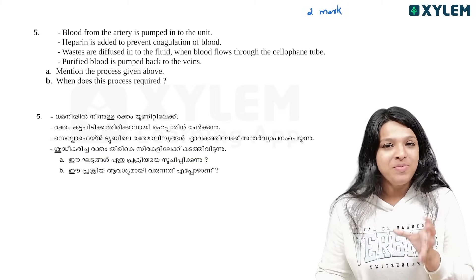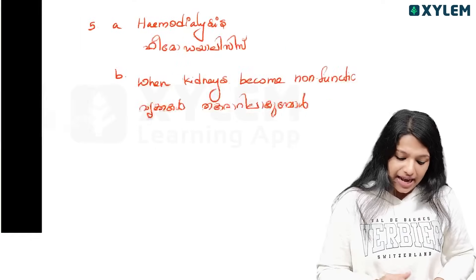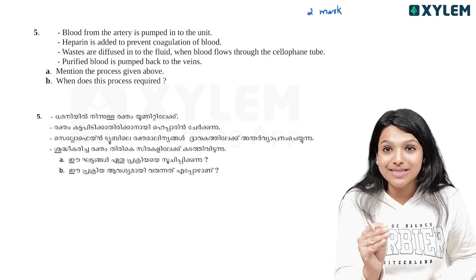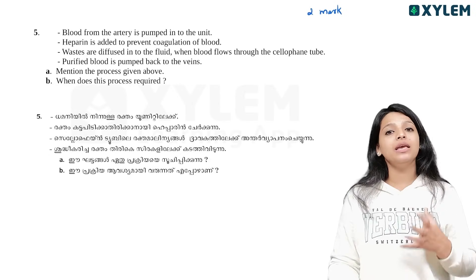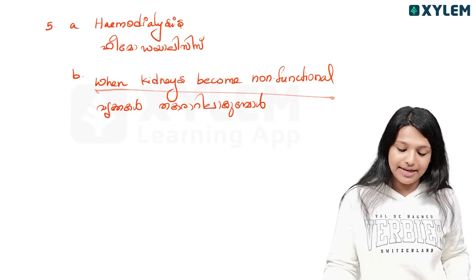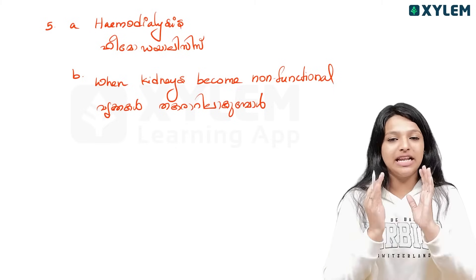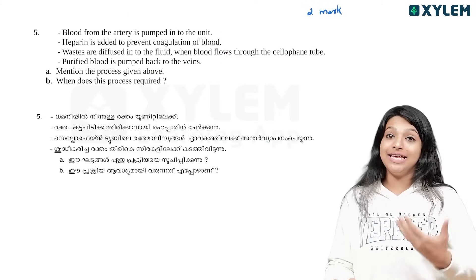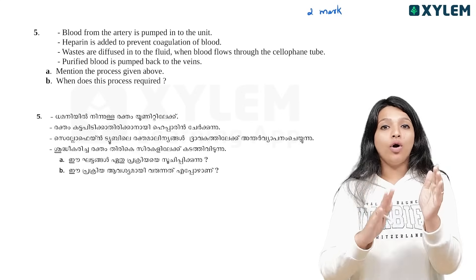This is what we learned — artificial kidney support for a very ill person. We call it hemodialysis. When does this process require hemodialysis? When there is kidney failure and the kidney is not functional, we need to do hemodialysis. This is the process. I'm going to test the steps and you will know all the steps.